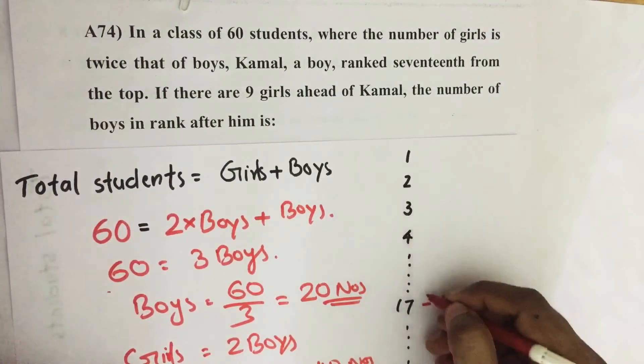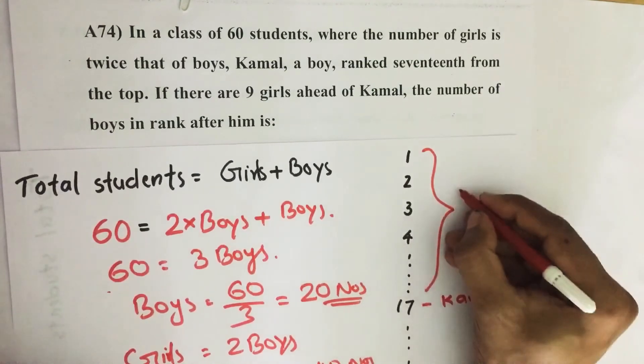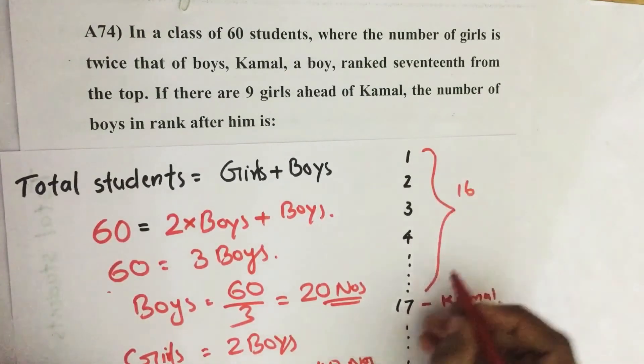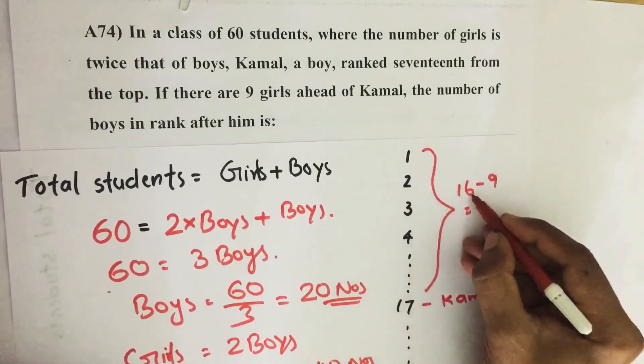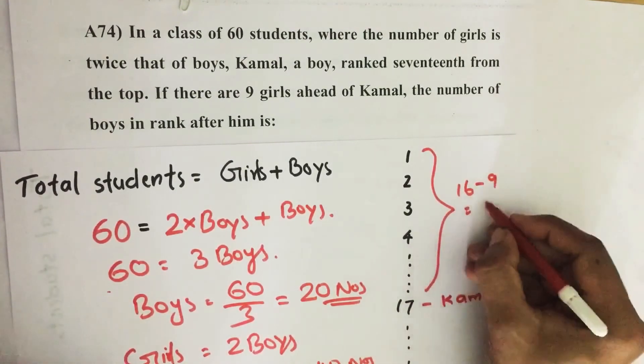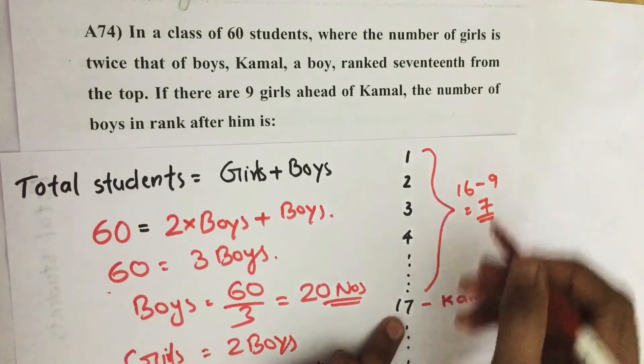That means total students above Kamal equal to 16, and 9 are girls, then there are 16 minus 9, 7 boys are there above Kamal.